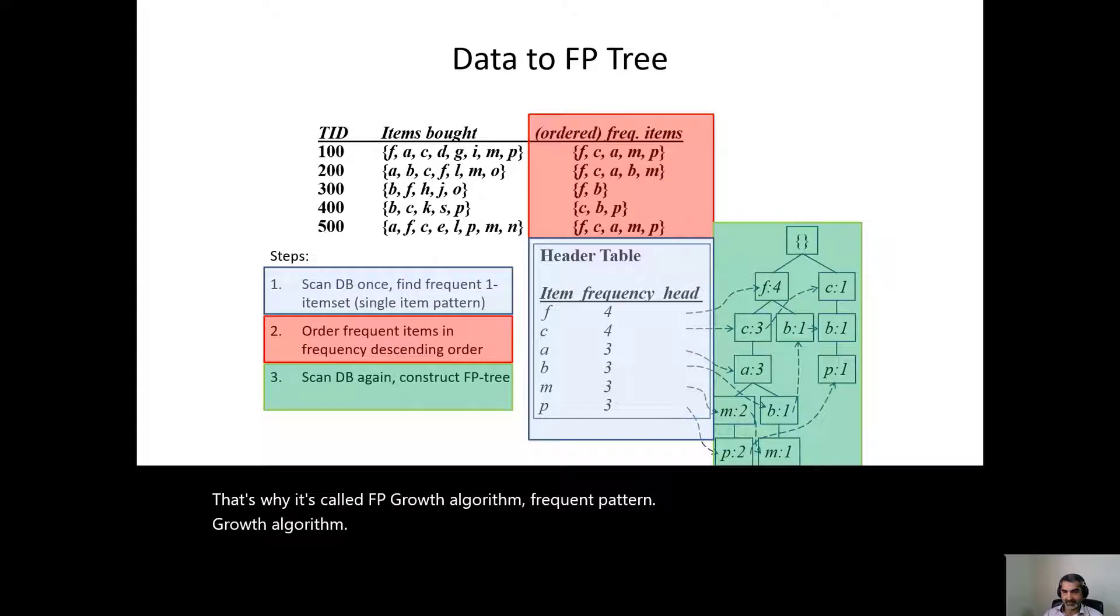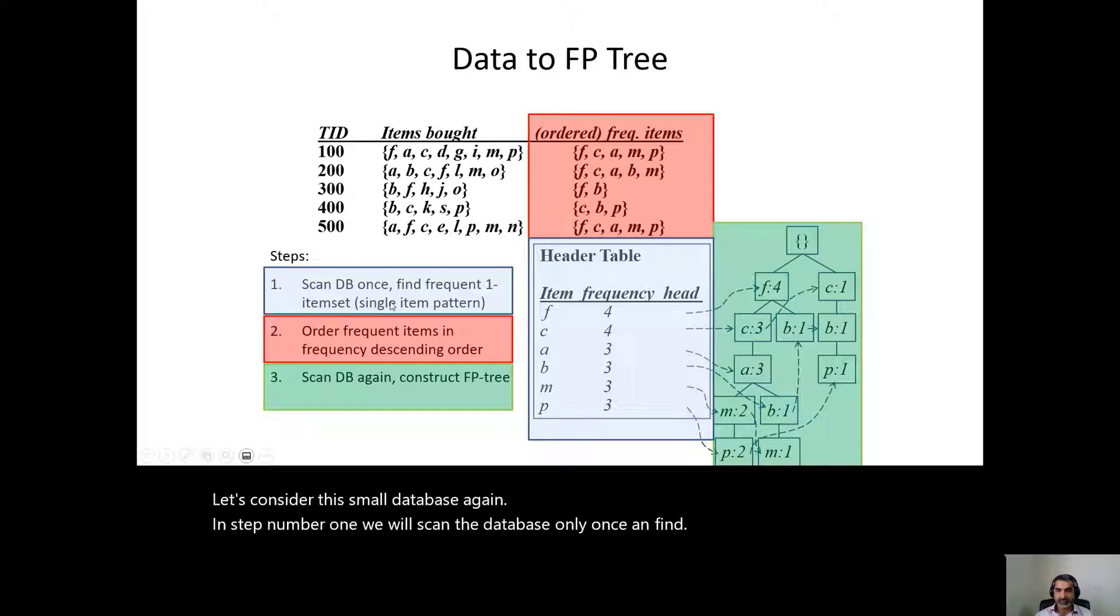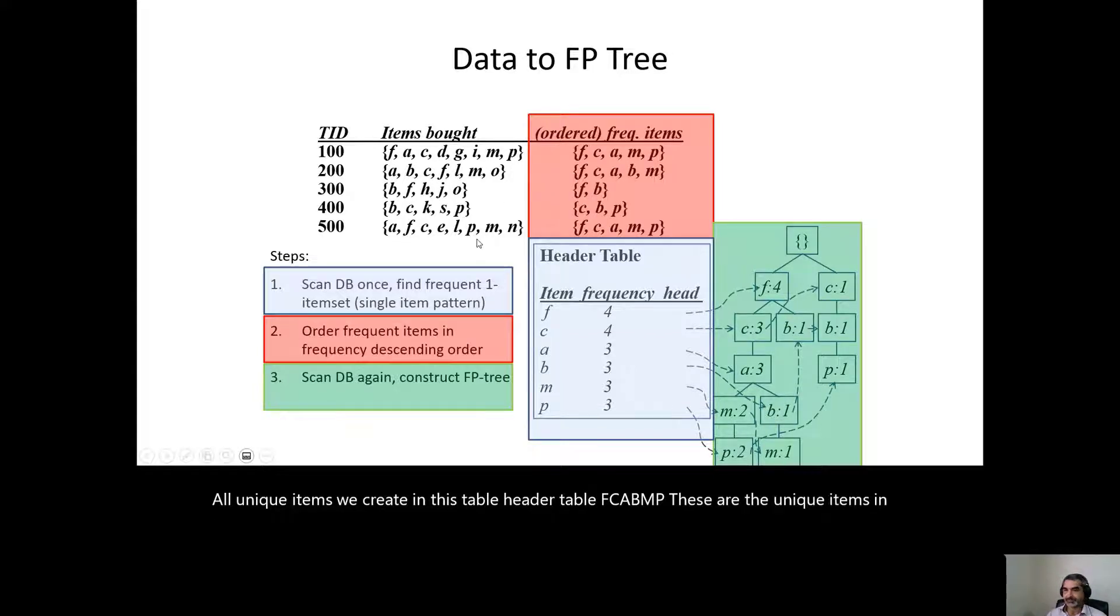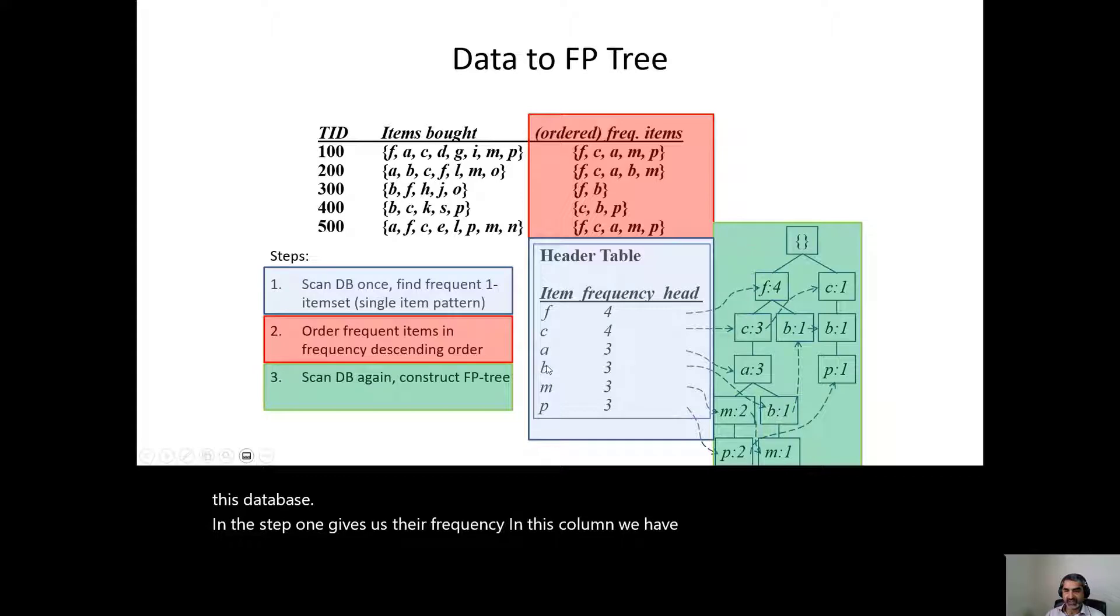There are three steps. Let's consider this small database again. In step number one, we will scan the database only once and find frequent item sets of length one. So in here, all unique items we create in this header table: F, C, A, B, M, P. These are the unique items in this database. And step one gives us their frequency. In this column, we have the frequency of F, C, A, B, M, P.